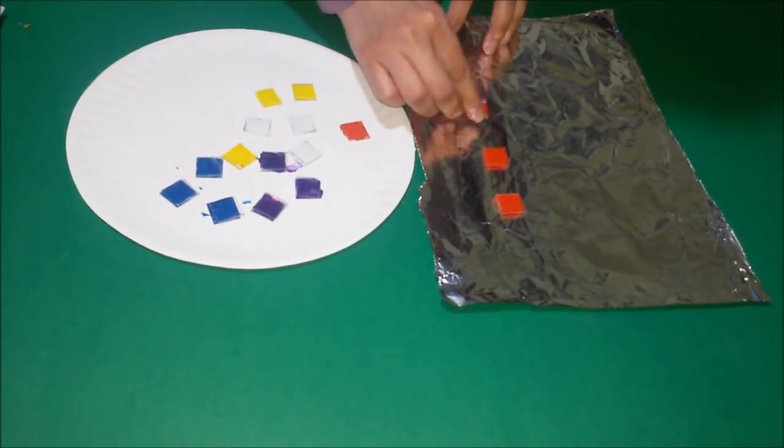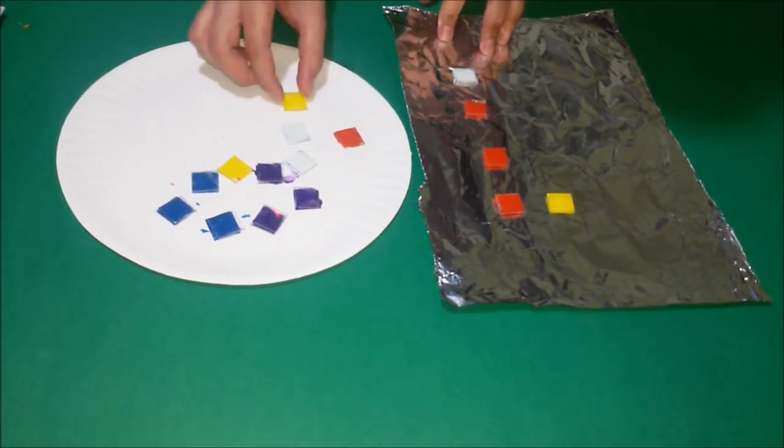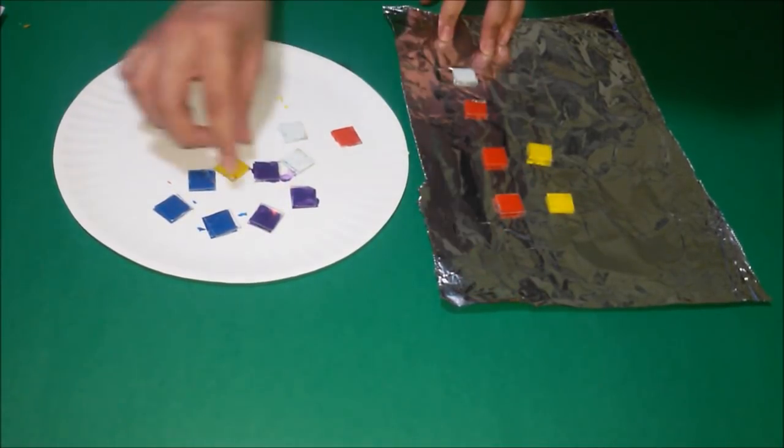Once we finish painting all the mosaics, we are going to put them on a foil and we'll take them to the oven and put them on the highest temperature for around 10 minutes.